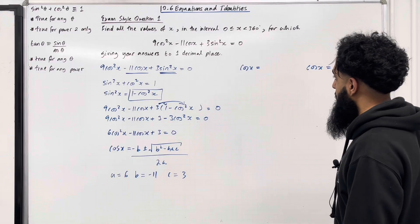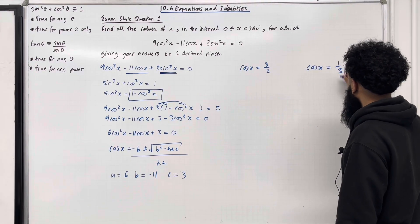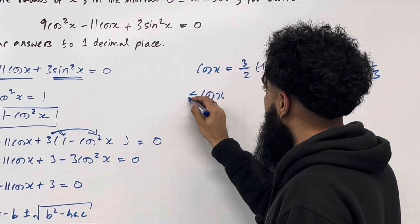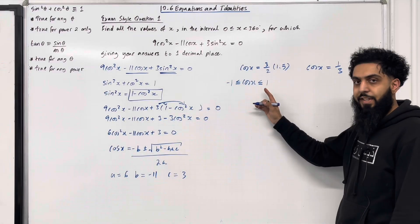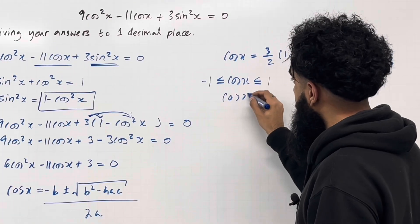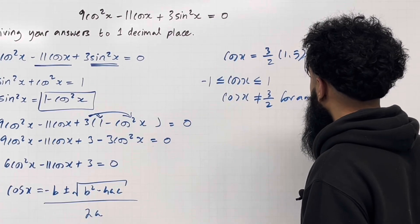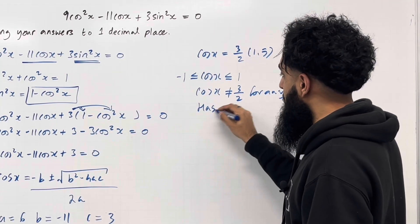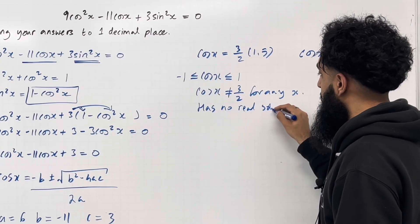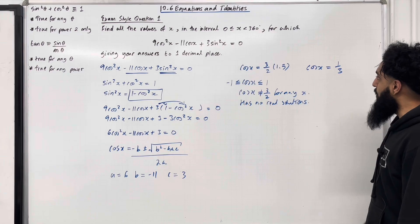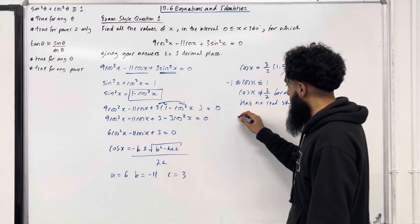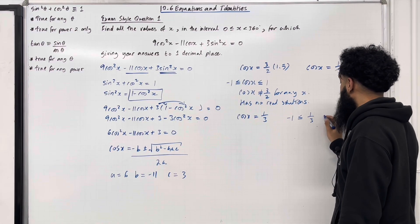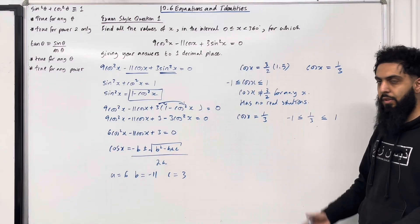Substituting into the quadratic formula gives two solutions: cos x = 3/2 and cos x = 1/3. Now 3/2 = 1.5. We know that cos x must satisfy −1 ≤ cos x ≤ 1, so cos x = 3/2 has no real solutions. Moving on to cos x = 1/3 — since 1/3 is between −1 and 1, this will have a solution.